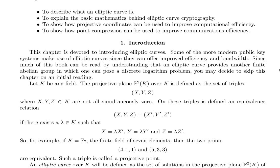Let K be any field. The projective plane P^2(K) over K is defined as the set of triples (X, Y, Z) where X, Y, Z is an element of K and are not all simultaneously zero. On these triples is defined an equivalence relation (X, Y, Z) is equivalent to (X', Y', Z') if there exists a lambda in K such that X equals lambda X', Y equals lambda Y', and Z equals lambda Z'.